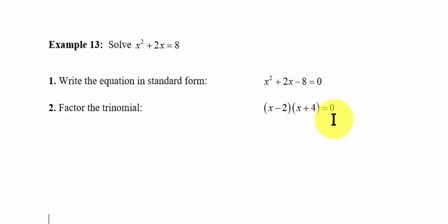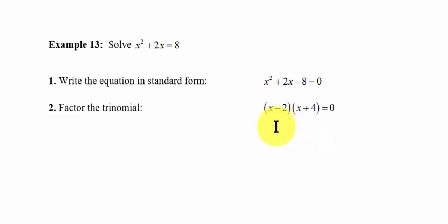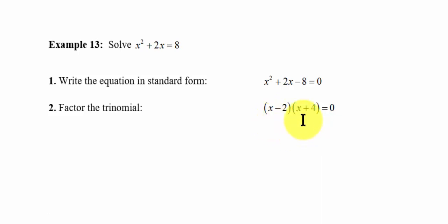If you remember from our first video, that zero product principle — if this term was considered A and this term was considered B, one of these items had to be equal to zero. So to make the first term zero, we'd use x equals 2. To make the second term zero, we'd use x equals negative 4.